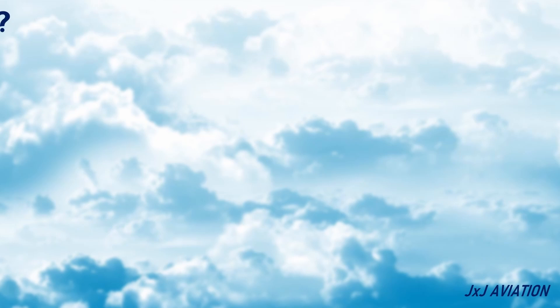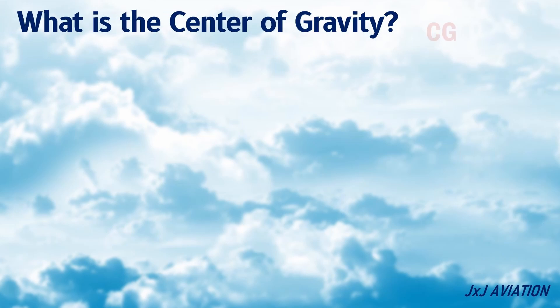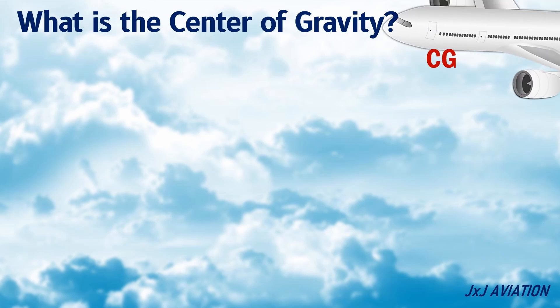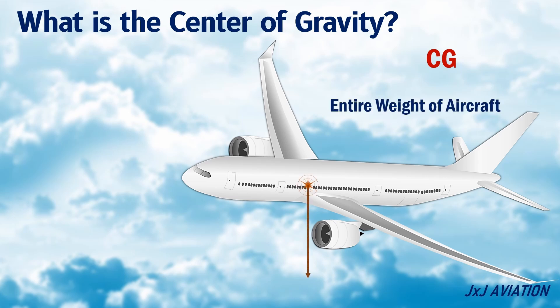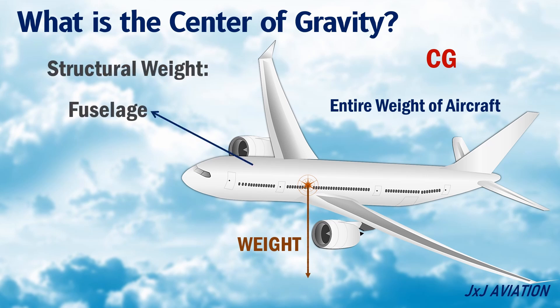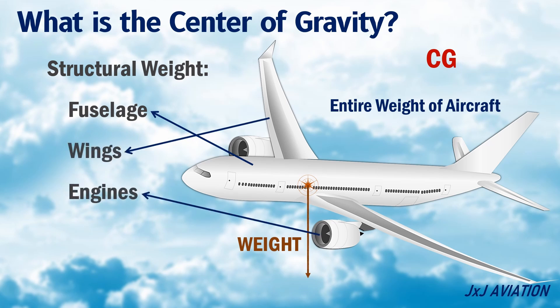What is the center of gravity or CG? Center of gravity on an aircraft is defined as a point where the entire weight of an aircraft is considered to be acting. The total weight of an aircraft should include the structural weight of the fuselage, the wings, the engines, fuel, and payload.